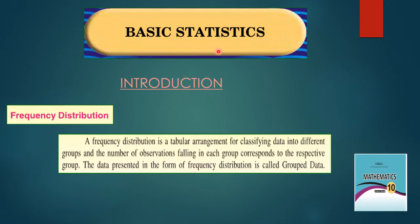Basic Statistics Introduction. Frequency distribution: a frequency distribution is a tabular arrangement for classifying data into different groups and the number of observations falling in each group corresponding to the respective group. The data presented in the form of frequency distribution is called grouped data.